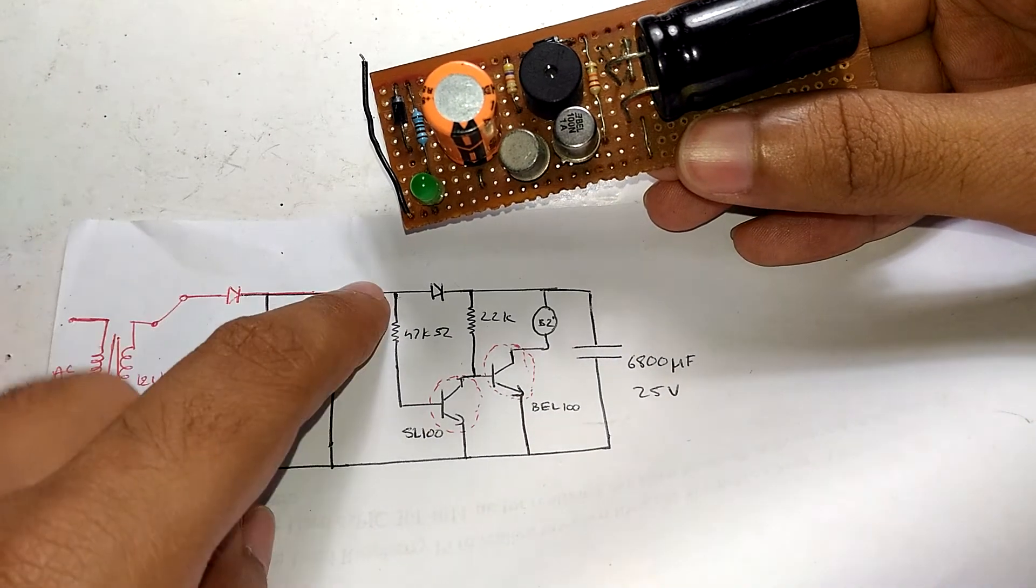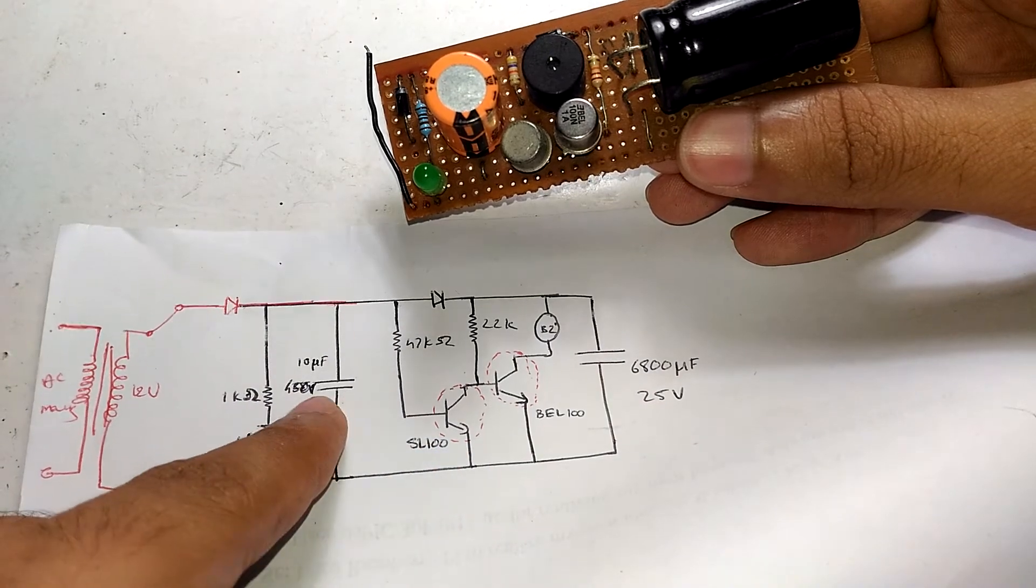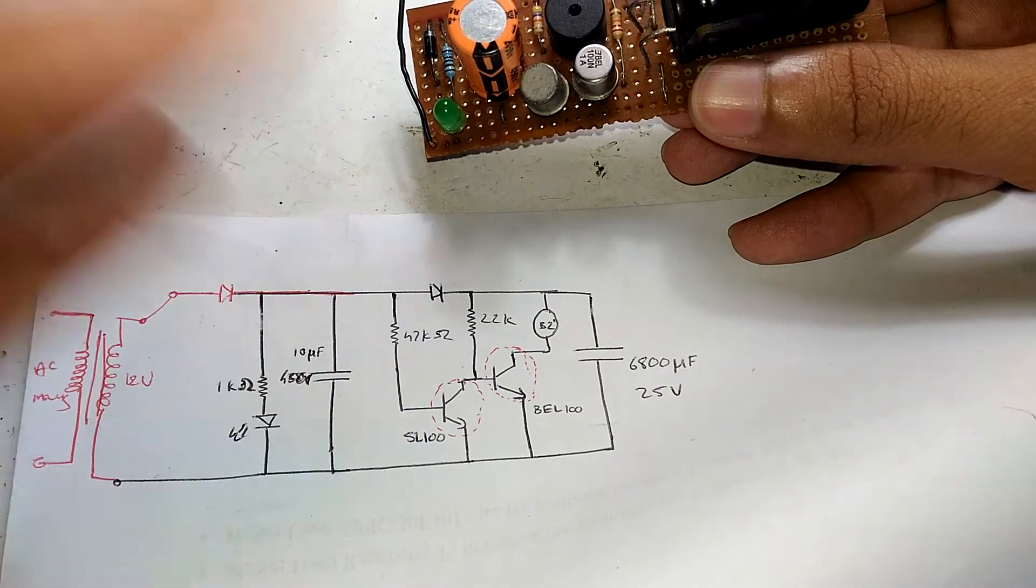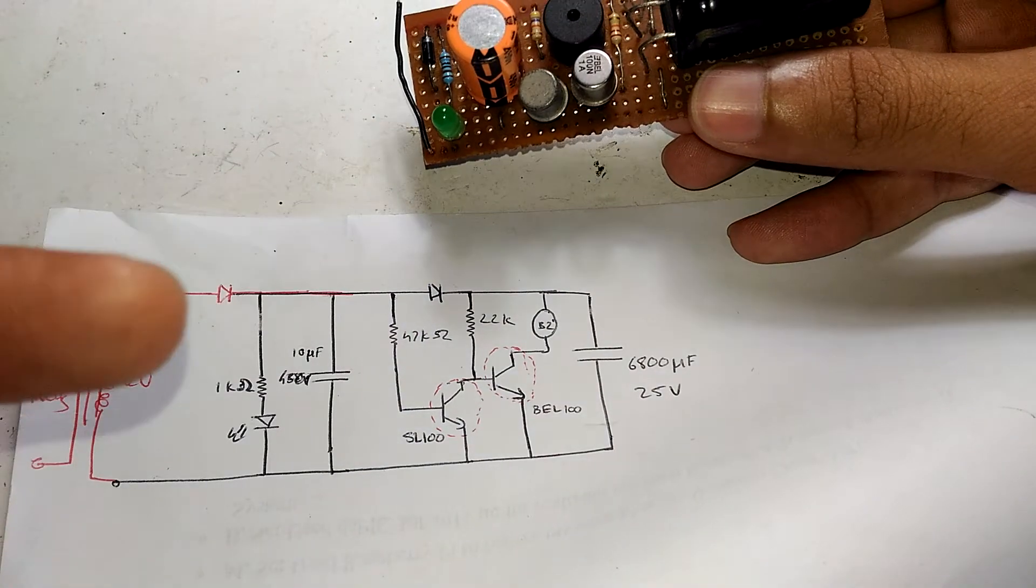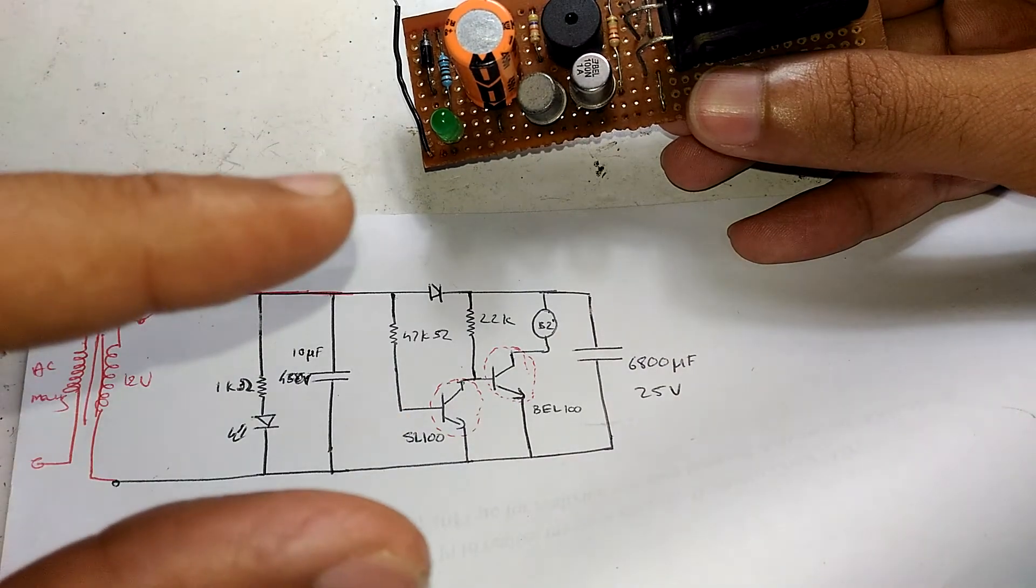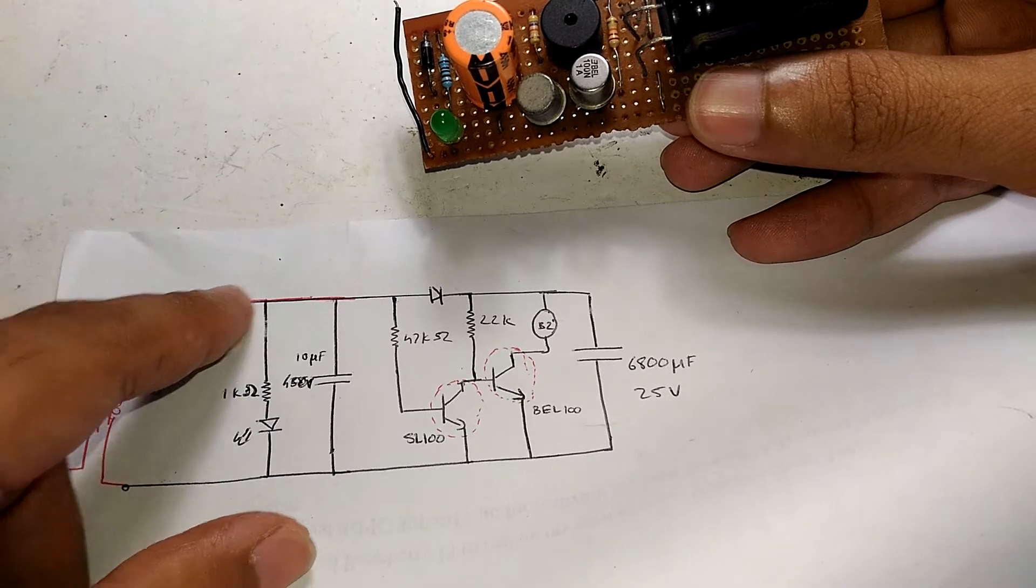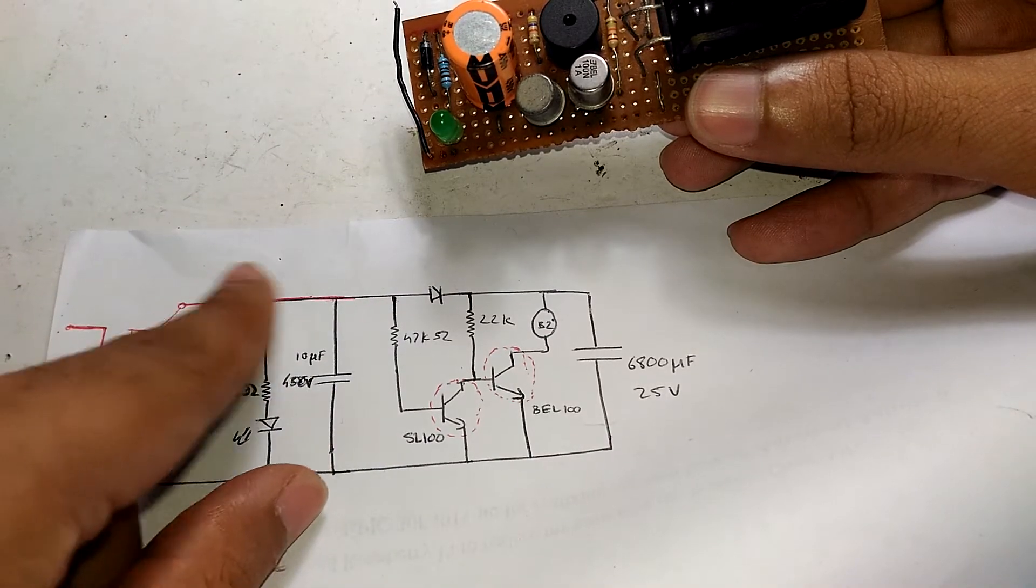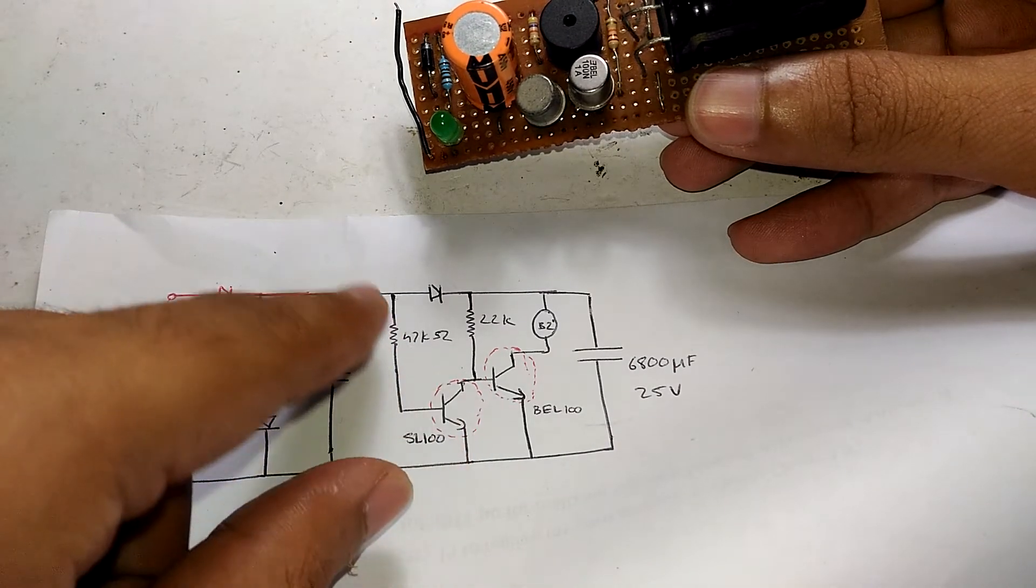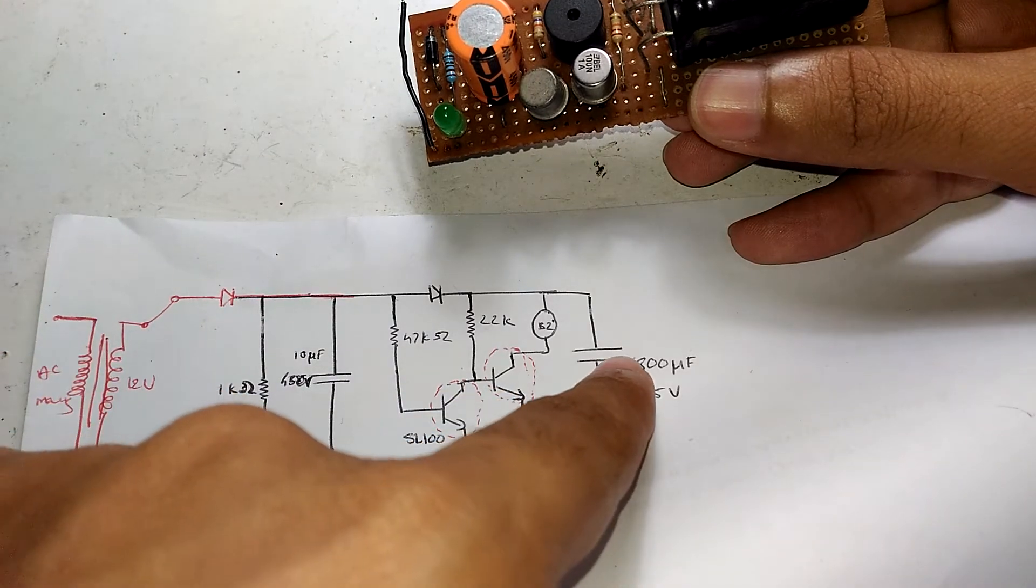Obviously the voltage will be low, but it stores a huge amount of charge. That's how it works with input current. Now let's say the input drops - there's no input voltage, so there's no base current for this SL100 transistor. This is the reason we need this capacitor.